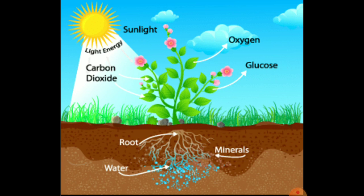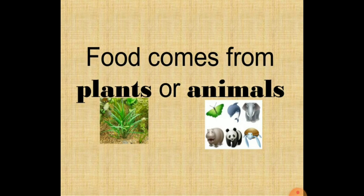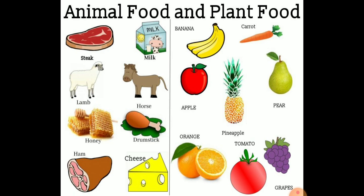Plants prepare their own food by the process of photosynthesis. Animals, however, cannot make their own food since they need ready-made food. This ready-made food comes from plants or from other animals. Thus, animals obtain their food from plants or from other animals. Some animals, however, eat both plant food as well as animal food.